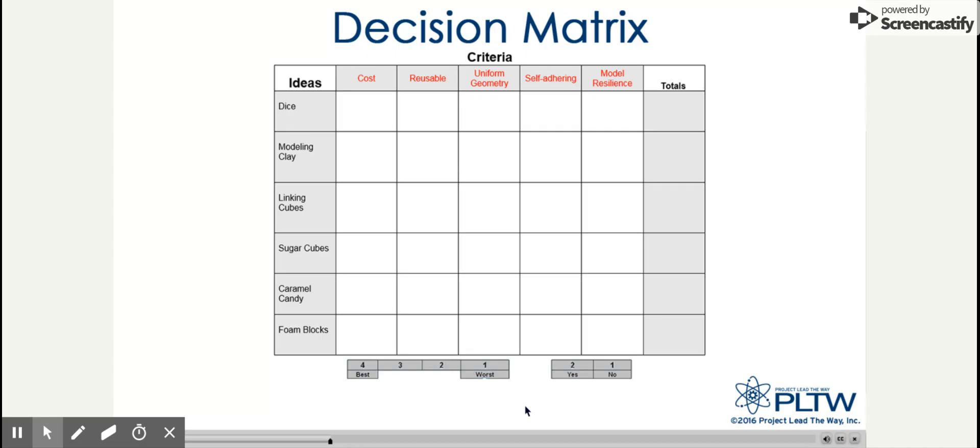Let's take a closer look at the scale. If a criteria is a yes or no answer, the score will be a 1 for no, or a 2 for yes. Other criteria are evaluated based on a scale of 1 to 4, with 4 being the highest.